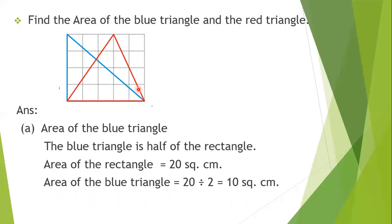First we will consider the blue triangle — just think of the blue triangle and ignore the red lines. That blue triangle is exactly half of the rectangle. A diagonal line is drawn through the middle of the rectangle, dividing it into two equal triangles. The blue triangle is one of those two equal triangles, so its area equals half the area of the rectangle.